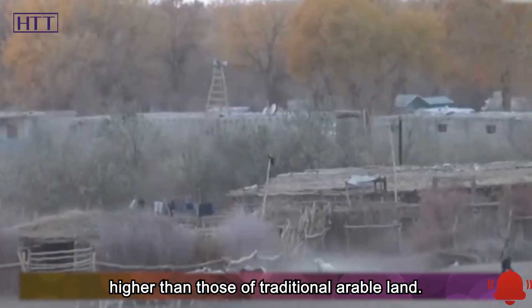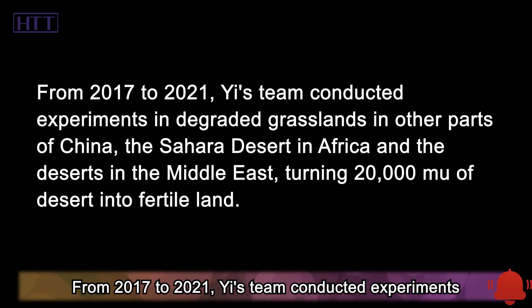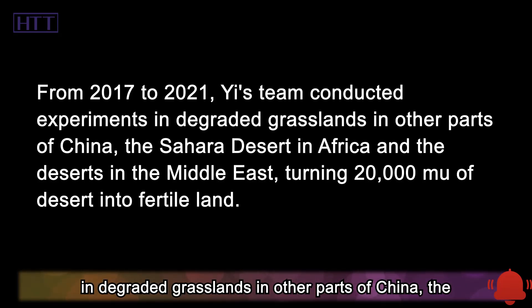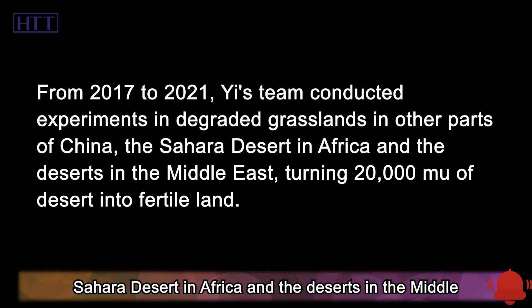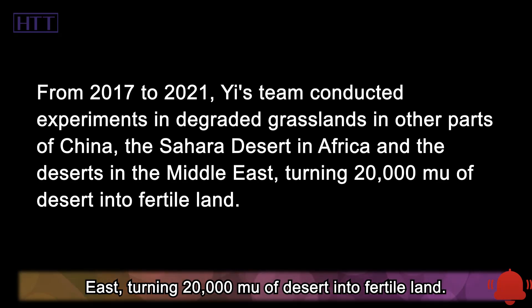From 2017 to 2021, Yi's team conducted experiments in degraded grasslands in other parts of China, the Sahara Desert in Africa, and the deserts in the Middle East, turning 20,000 mu of desert into fertile land.